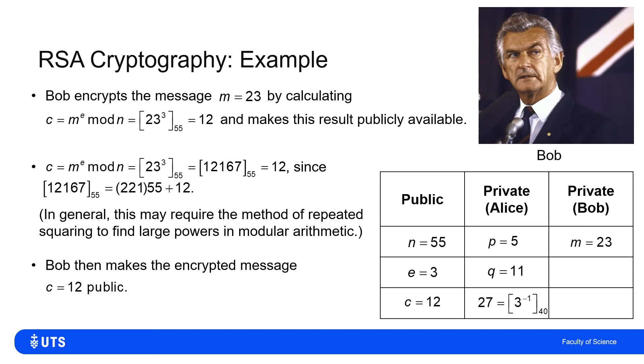So if I update the table of who knows what, everybody knows n is 55, e is 3. And now anybody can see the encoded message C is 12.